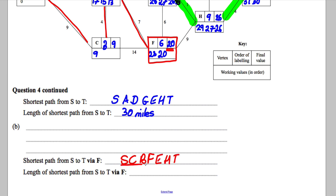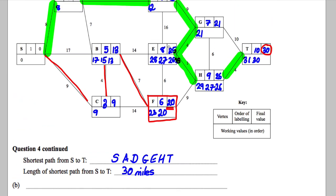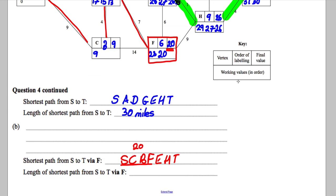This bit here took us 20. So that bit there took us 20. And this bit here, 6 and 1 is 7 and 4 is 11. So this bit here must be 11. So I would say 31 miles is my correct answer for that.